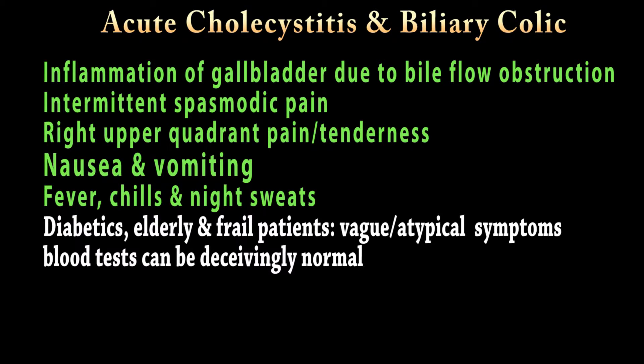Acute cholecystitis refers to the inflammation of the gallbladder, which is basically due to bile flow obstruction. Biliary colic is an intermittent spasmodic pain in the right upper quadrant just below the costal margin or rib cage, often associated with tenderness, nausea, vomiting, fever, chills, and night sweats — all characteristic of an acute cholecystitis attack. It is worth noting that diabetics, elderly, and frail patients might have vague and atypical symptoms, and in this patient population even blood tests can be deceivingly normal.